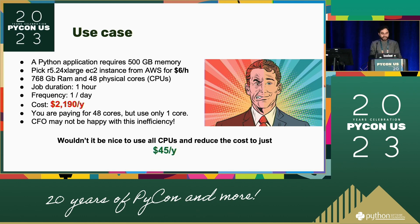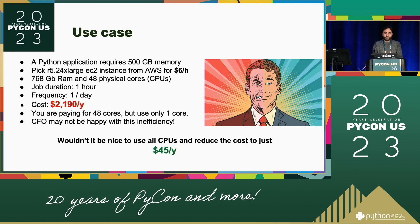It would be really nice if you could reduce the cost to just $45 per month by taking advantage of all 48 cores that this instance gives you. Of course, it would be nice.